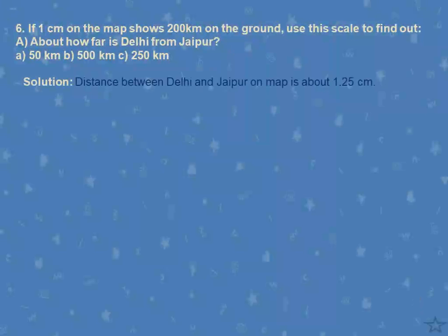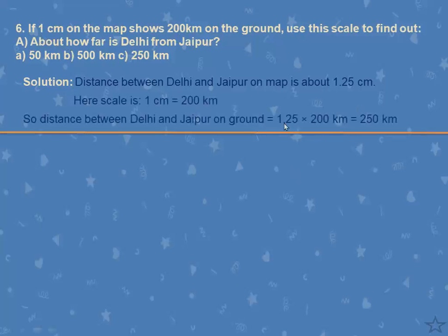Note that when you keep the scale, some may find it to be 1.20, 1.22, 1.23, or 1.24 — anything can be considered because we are taking a rough calculation. I have taken it as 1.25 centimeters. The scale is 1 cm = 200 km, so 1.25 × 200 = 250 kilometers. So the answer is 250 kilometers.